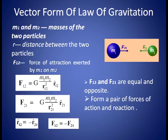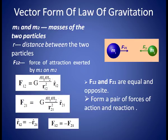Hence F₁₂ and F₂₁ are equal and opposite — their magnitudes are the same and the negative sign denotes that the directions are opposite. Therefore, F₁₂ and F₂₁ are equal in magnitude and opposite in direction, forming a pair of action and reaction forces as described in Newton's third law.